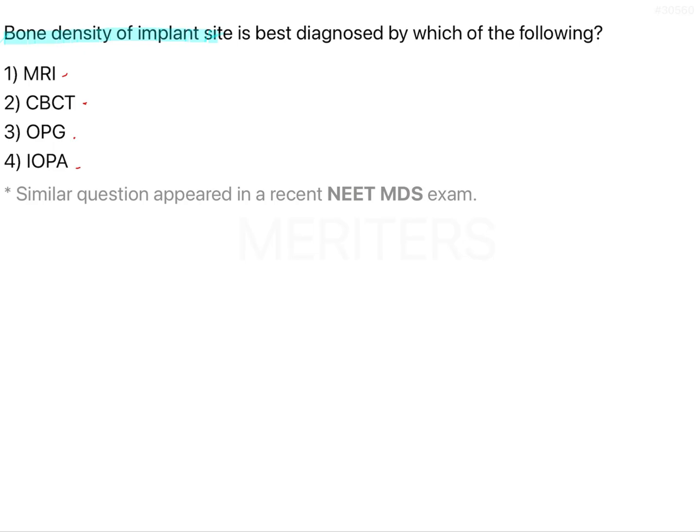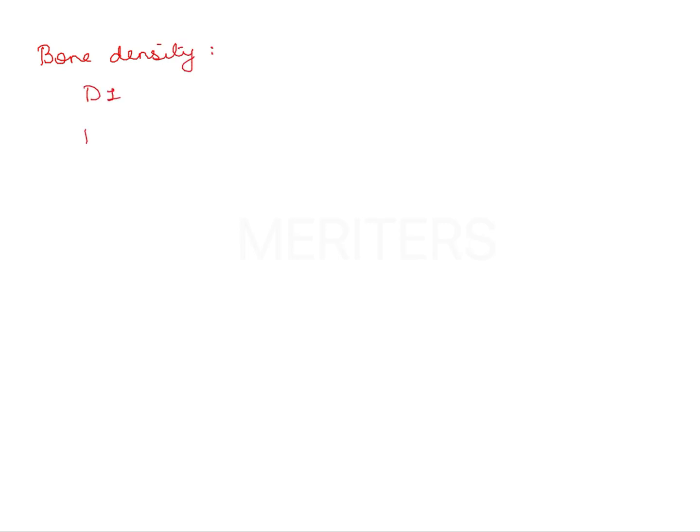When we talk of the bone density for implant placement, there are four categories according to MISH. So bone density is classified as D1, D2, D3, and D4.